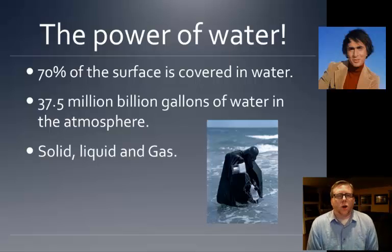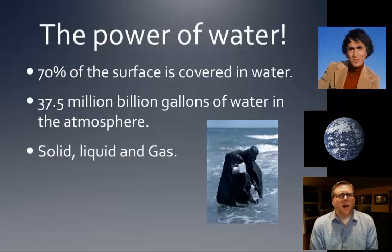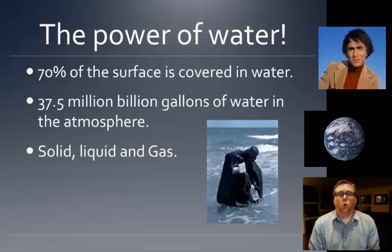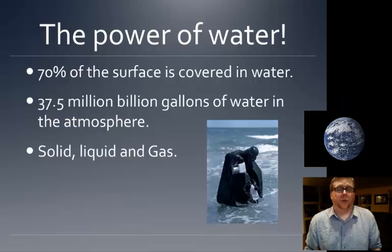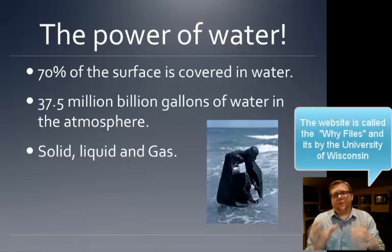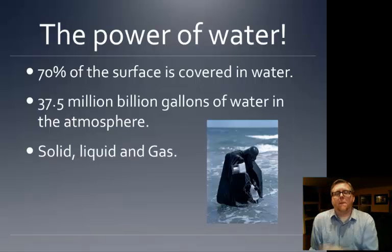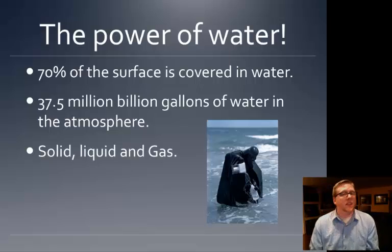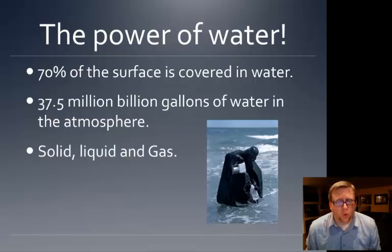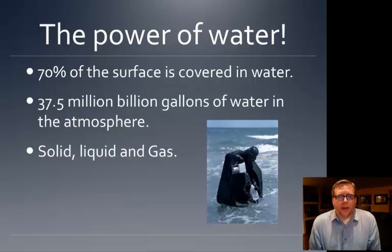When we looked at Carl Sagan's pale blue dot, we're called that because 70% of our planet is covered in a giant ocean — we're really the water planet. I found on the internet that 37.5 million billions of gallons of water are in our atmosphere alone — and that's nothing compared to the amount in our oceans. All that water plays a very major role on our planet.